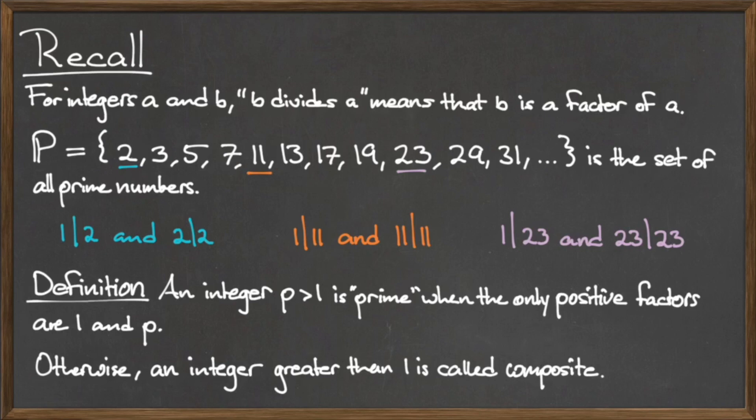We say that an integer p greater than 1 is prime when the only positive factors of that integer are 1 and p itself. Any integer that has more than two positive factors is called composite.